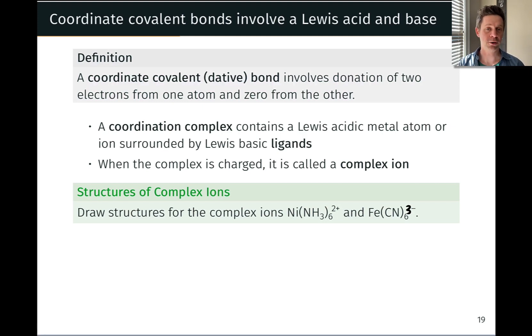A coordinate covalent bond involves the donation of two electrons from one atom, the Lewis base, and zero from the other, the Lewis acid. An example of a coordinate covalent bond is shown here for hydrated copper 2+. When you take a copper 2+ salt, copper 2 sulfate for example, and dissolve it in water, these kinds of bonds form very rapidly. Lewis basic water coordinates to the Lewis acidic copper 2+ cation, and there is a covalent bond created. There's electron sharing here, but both electrons are coming from the nonmetal side, from the oxygen side.